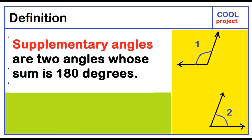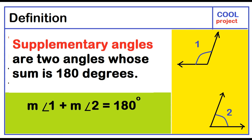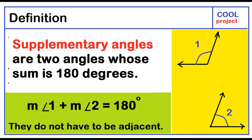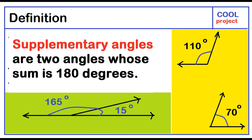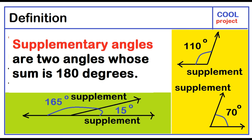Supplementary angles are two angles whose sum is 180 degrees. The measure of angle 1 plus the measure of angle 2 equals 180 degrees. Supplementary angles do not have to be adjacent. Examples: 165 degrees and 15 degrees, and 110 degrees and 70 degrees — both pairs sum to 180 degrees. Each angle is called a supplement of the other.